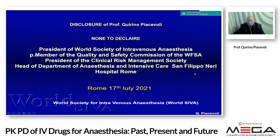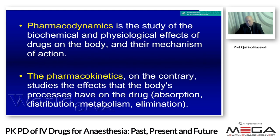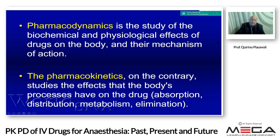My disclosure: none to declare. I would like to remember first of all that there are two very important pillars for good anesthesia. The first is pharmacodynamics — the study of the biochemical and physiological effects of drugs on the body and their mechanism of action. The second pillar is pharmacokinetics, which studies the effects that the body's processes have on the drug, such as absorption, distribution, metabolism, and elimination. We are missing one pillar — the pharmacogenetics — which we have no time to cover tonight but is very important.